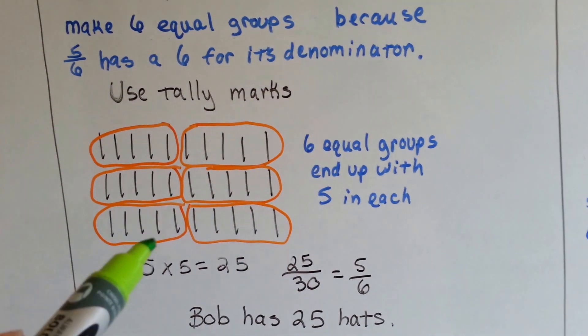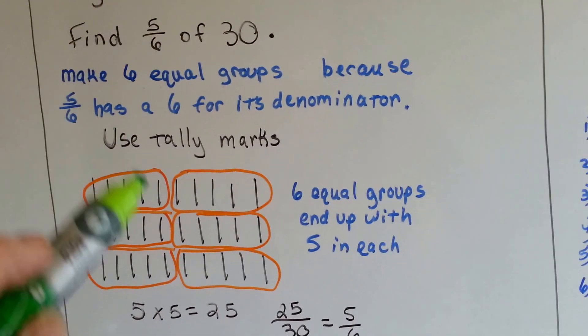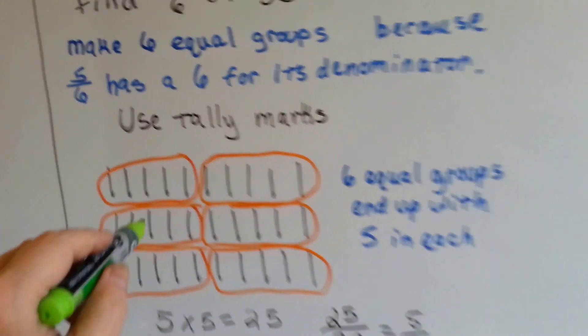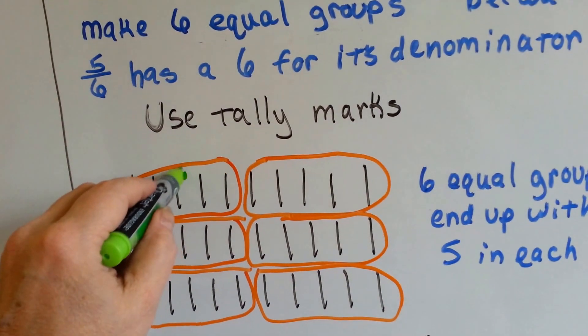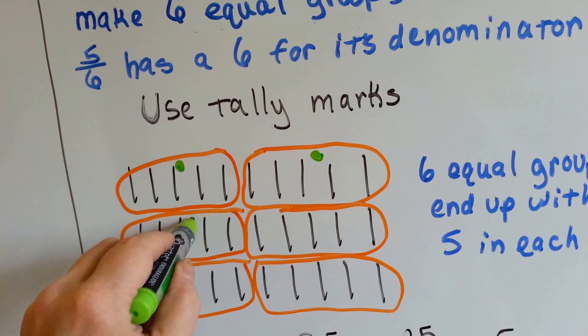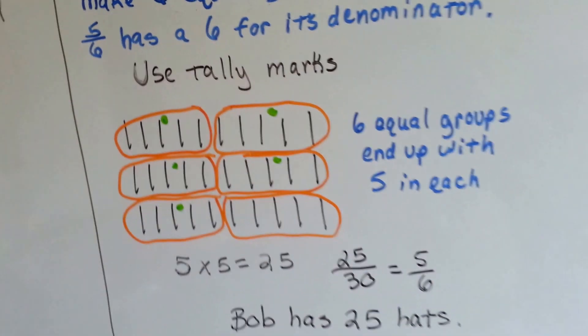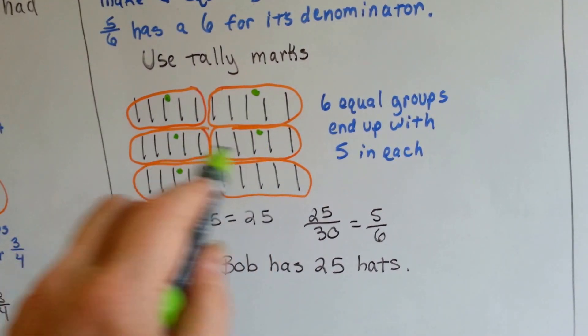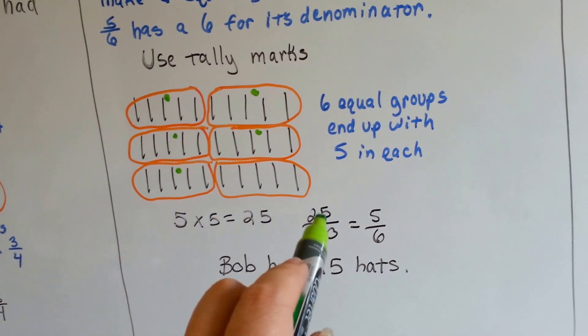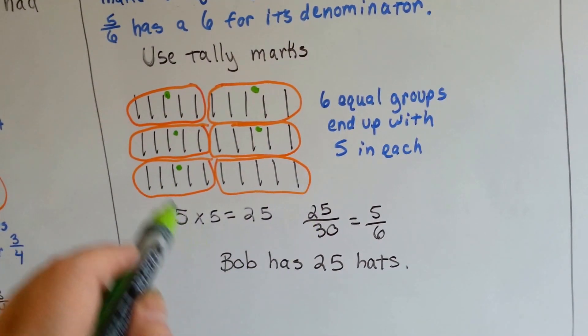So we know that if he had five-sixths of these, we'd have 5 of these—1, 2, 3, 4, 5 of the 6 groups. How many tally marks are in those 5 groups? There's 25. 5 times 5 is 25.